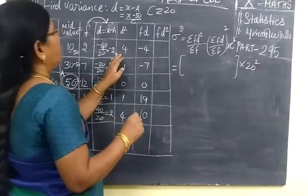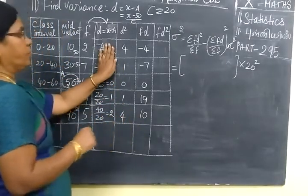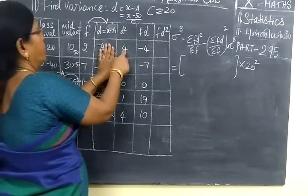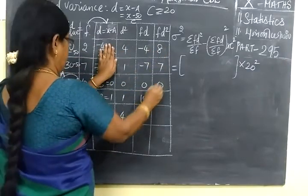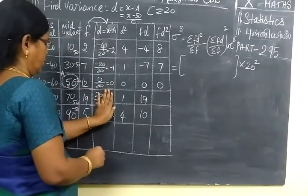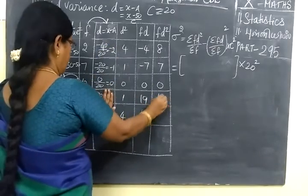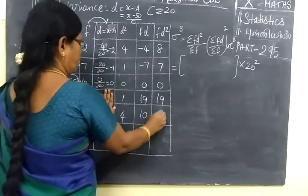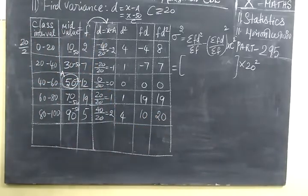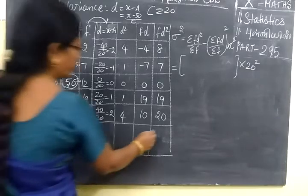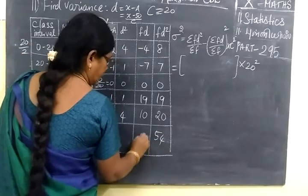Now f into d square. So f into d square. So f into d square. So 8 takes. Then 7, 0, 1, hyphen here. So 19. 5 fourths are 20. Now if you add, you are getting 54. Here 80.